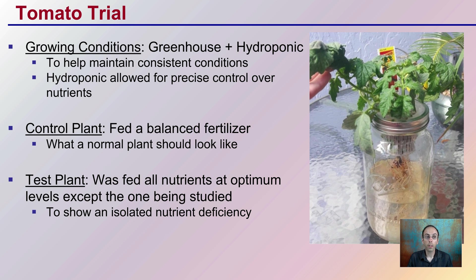Calcium can also be involved with cell signaling. There's a tomato trial here done in a greenhouse in a hydroponic setup to help maintain consistent conditions. The hydroponics allowed only very specific nutrients to be added compared to a soil-based system. You're going to see a control plant fed a balanced fertilizer — what a normal plant should look like — and then the test plant, which was fed all the nutrients except the one being studied, to allow for isolated deficiency symptoms to show up.